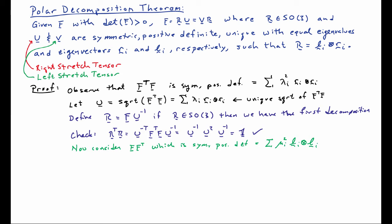We can now do the same thing with FF transpose. FF transpose is symmetric, since taking its transpose gives FF transpose back, and it's also positive definite, which is easy to check by applying it to a vector X and dotting the result with X. Since it's symmetric positive definite, it has a spectral representation: μ_i squared L_i tensor outer product L_i. We assign V to be the unique square root of FF transpose, so V equals the sum of μ_i L_i tensor outer product L_i.